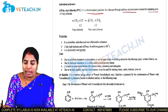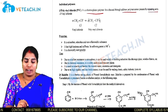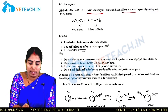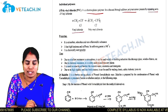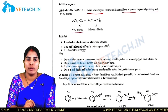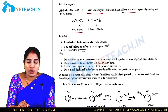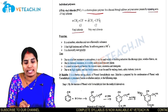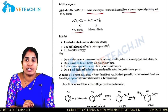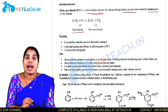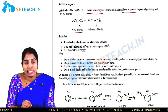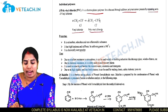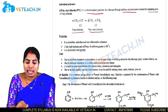Let us see the structure of vinyl chloride: CH2 double bond CHCl. Vinyl chloride undergoes free radical addition polymerization in the presence of benzoyl peroxide or hydrogen peroxide at 30 to 80 degrees centigrade to give polyvinyl chloride.